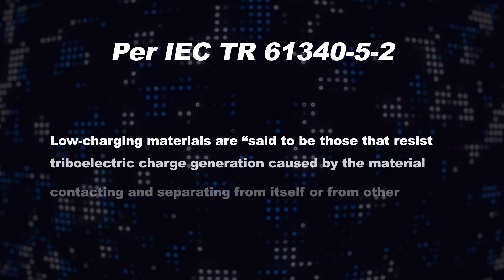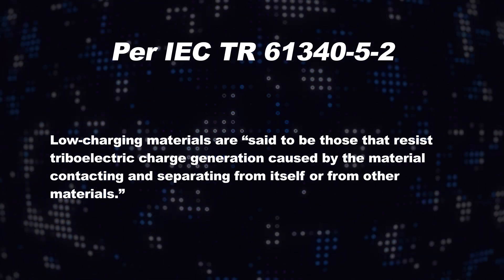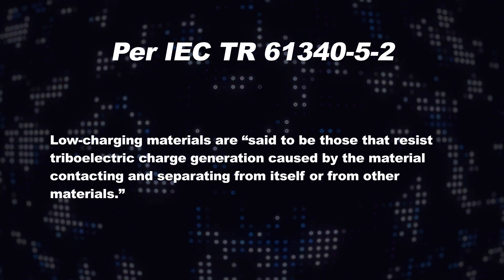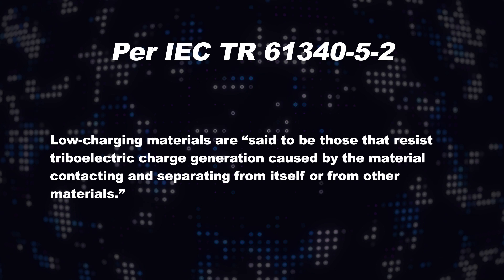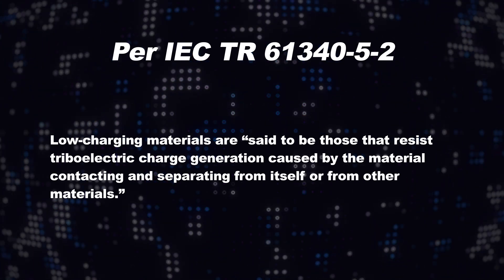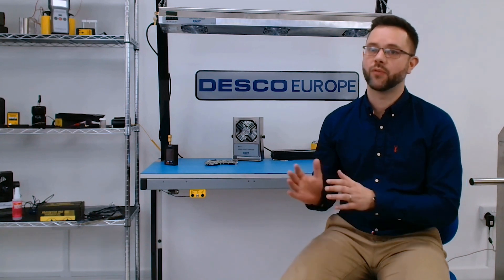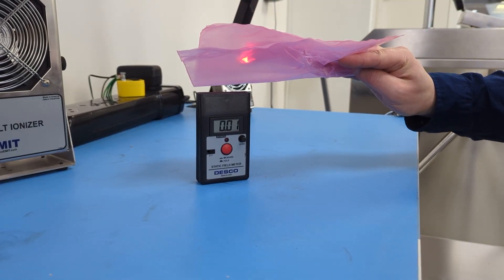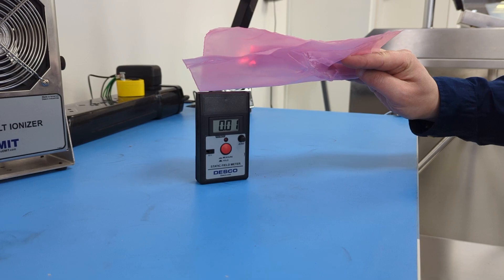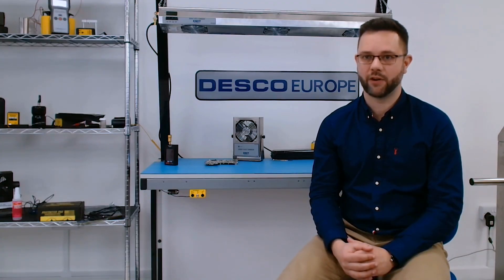Low charging materials, according to IEC TR 61340-5-2, are said to be those that resist triboelectric charge generation caused by the material contacting and separating from itself or other materials. So while materials of this nature will not necessarily assist in providing a pathway to ground for an electrostatic charge, they will also not be causing a problem by introducing a static charge into your EPA. These types of materials are therefore fine to have in the electrostatic protected area.